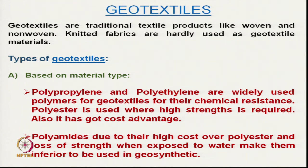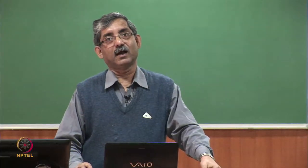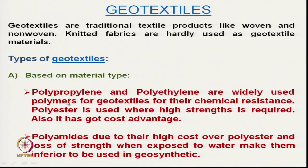Geotextiles can be woven, nonwoven, or — although knitted geotextiles are hardly used — for specific applications, warp knitted geotextiles exist. If we try to classify geotextiles, we can classify them first based on the material used — raw materials like synthetic fiber or natural fiber. For synthetic or manmade geotextiles, we can use polypropylene or polyethylene as they are widely used for geotextile due to their chemical inertness and resistance to chemicals.